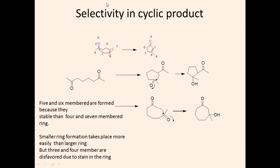Selectivity in cyclic products: an intramolecular aldol condensation of diketones gives cyclic products. Five- and six-membered rings are generally formed — not seven-membered rings — because five- and six-membered rings are the most stable. Three- and four-membered rings are not formed due to ring strain, and seven-membered rings are also not favored. When multiple ring sizes are possible, only five- or six-membered rings are predominantly produced.